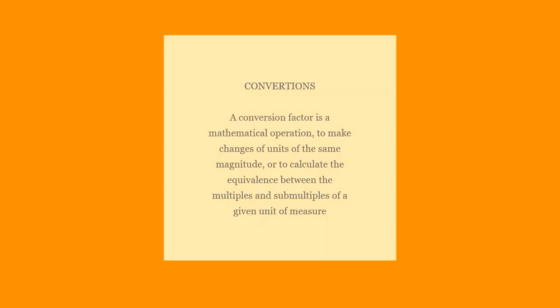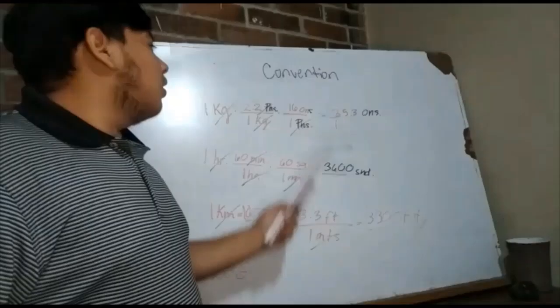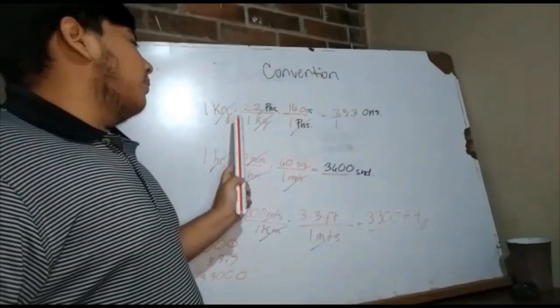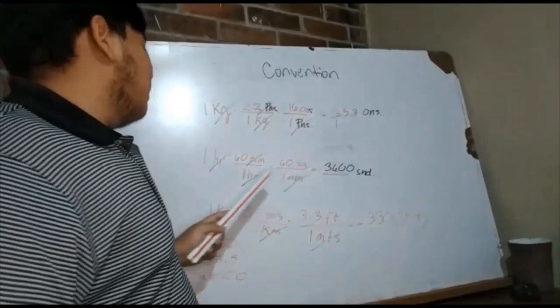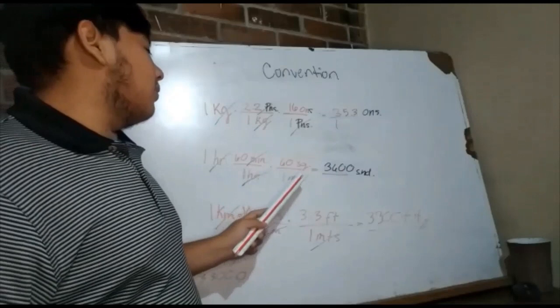A conversion factor is a mathematical operation to make change of units of the same magnitude, or calculate the equivalence between the multiples and submultiples of a unit of measure. Here we go from one hour to 3600 seconds. We go from a kilogram to a gram, from 2.1 to a point, and the result is 3600 seconds.